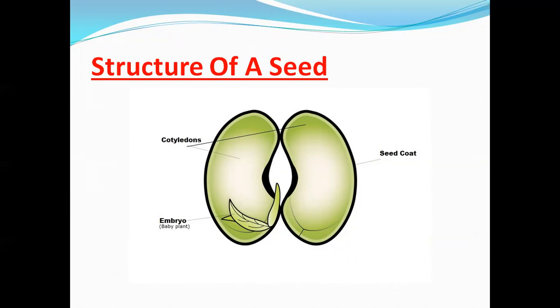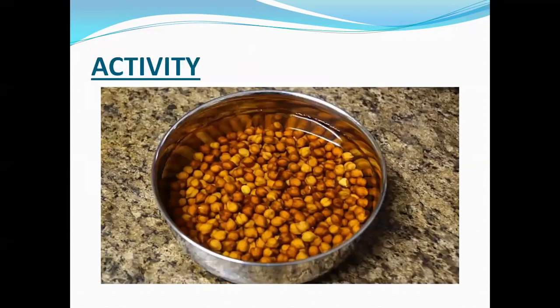You can easily observe the seed parts by soaking seeds in water overnight. So it's activity time for all of you. Soak some gram seeds in water overnight and demonstrate the different parts of a seed — the seed coat, embryo, and cotyledons.